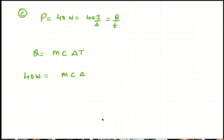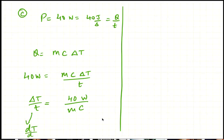So 40 watts equals mc delta T by T, and delta T by T is the rate at which temperature is rising. We will call this dT by dt, that's the rate at which temperature is rising.